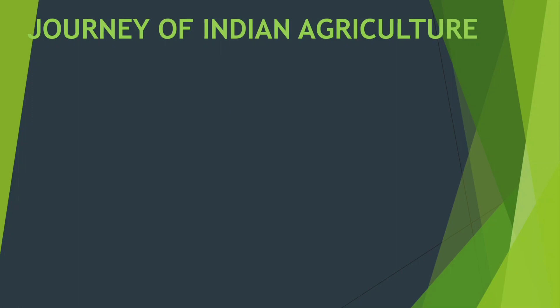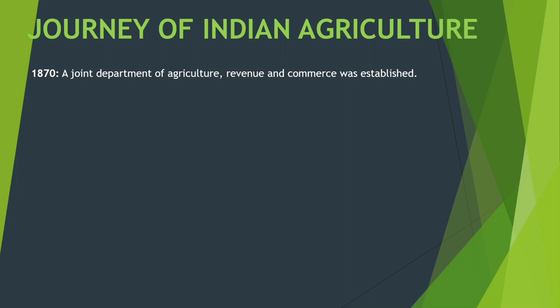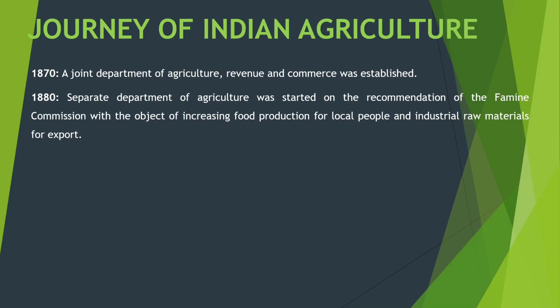In 1870, a joint department of agriculture, revenue and commerce was established. एक joint department of agriculture सबसे पहले established हुआ था। In 1880, separate branches of agriculture बनने लगे, on the recommendation of the famine commission, with the object of increasing food production for local people and industrial raw materials for export. ज्यादा से ज्यादा food production को बढ़ाना local people के लिए और industrial raw materials जिसको export भी किया जा सके।